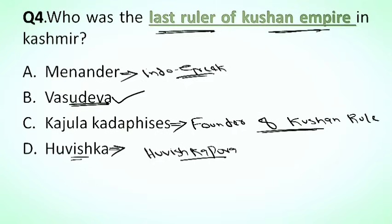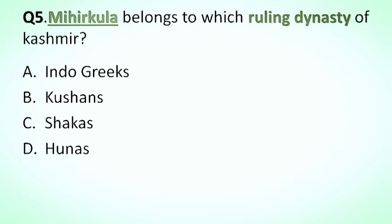Houshkapura is now known as Ushkur in Baramula district. Our next question is: Mihirkula belongs to which ruling dynasty of Kashmir? Options: A. Indo-Greek, B. Kushana, C. Shakas, D. Hunas. The correct answer is option D, Hunas. He was the founder of Huna rule in Kashmir in 525 AD.